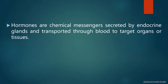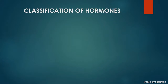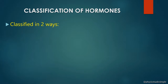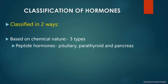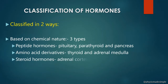The classification of hormones is done in two ways: one is based on their chemical nature, and the second is based on their mechanism of action. Based on chemical nature, hormones are classified into three types: peptide hormones, amino acid derivatives, and steroid hormones.